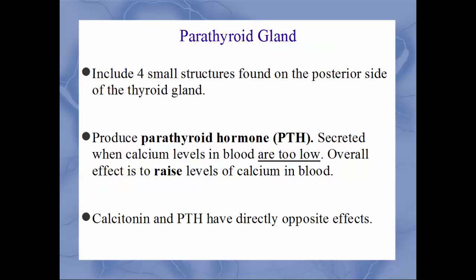Moving on to the parathyroid gland — the four nodules on the posterior side of the thyroid. They produce parathyroid hormone (PTH), which should be the easiest hormone to remember. PTH is secreted when calcium levels are too low, so its overall effect is to raise blood calcium. Calcitonin and PTH have exactly opposite effects: calcitonin lowers blood calcium, PTH raises it.